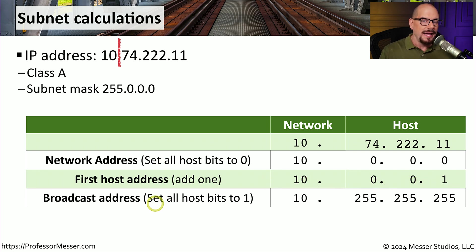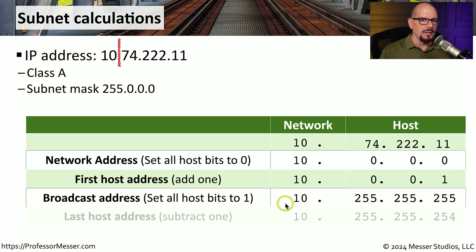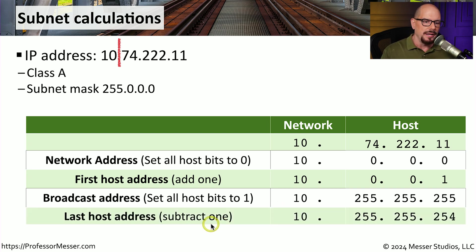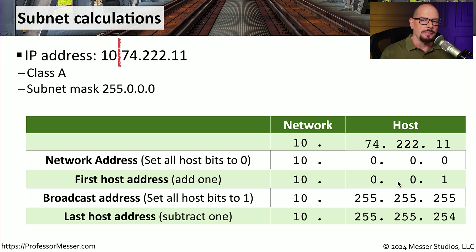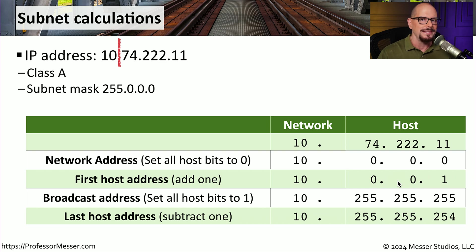To calculate the broadcast address for this subnet, we set all host bits to one, which gives us 10.255.255.255. To find the last usable address, we subtract one from the broadcast address, so the last usable address on this network is 10.255.255.254. With these four values, you can determine the network address, identify usable addresses within the range, and know the broadcast address for the entire network.